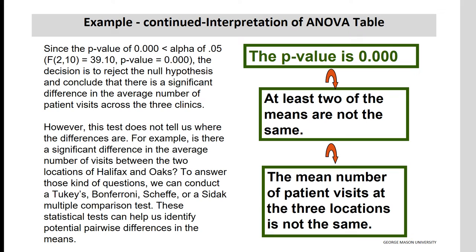Since the p-value of 0.000 is less than alpha of 0.05, the decision is to reject the null hypothesis and conclude that there is a significant difference in the average number of patient visits across the three clinics. However, this test does not tell us where the differences are. For example, is there a significant difference in average visits between Halifax and Oaks? To answer those questions, we can conduct a Tukey, Bonferroni, Scheffé, or SIDAC multiple comparison test.